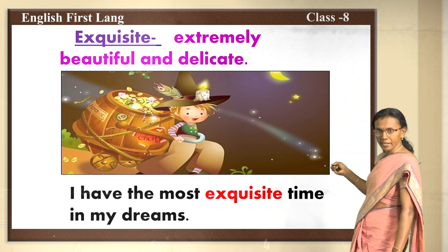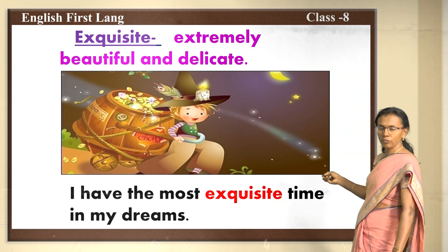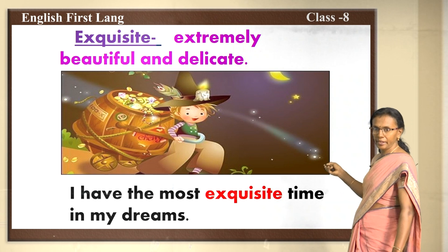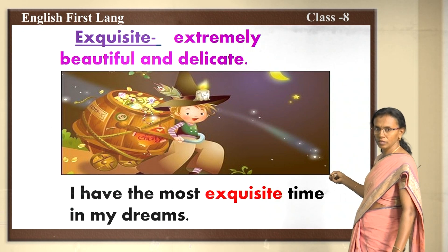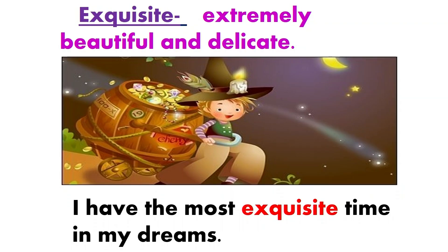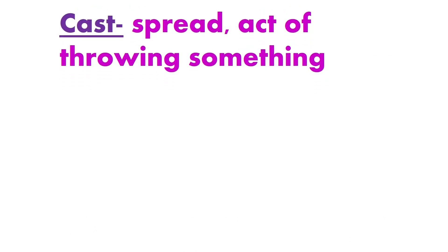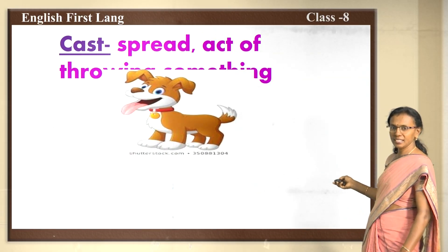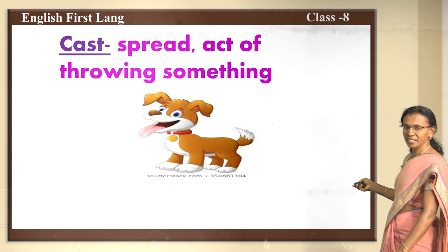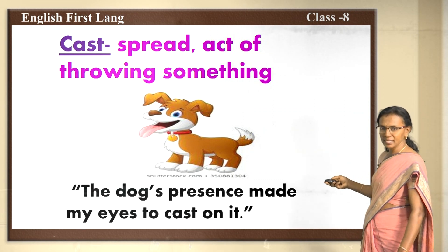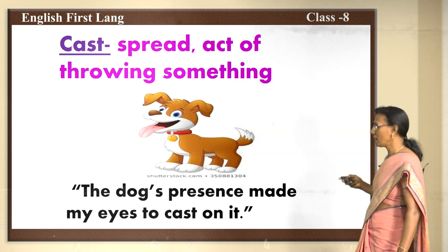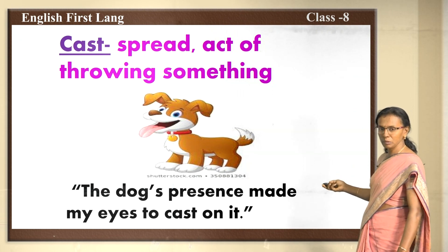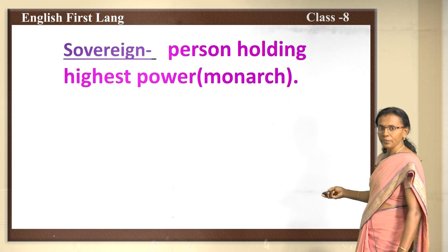'Exquisite' means extremely beautiful and delicate. For example: I have the most exquisite time in my dreams. Next word is 'cast' — it means to spread, or the act of throwing something. The dog's presence made my eyes cast on it. Whoever it may be, they will be attracted towards it.